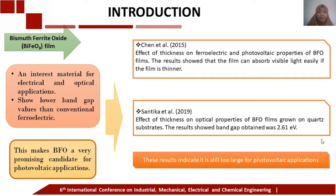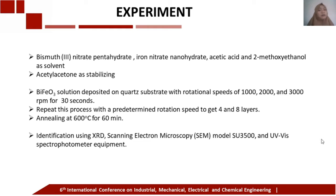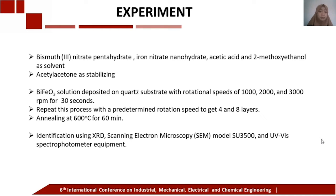This study aimed to examine the effect of rotational speed on microstructure and optical properties of BFO on a quartz substrate. For the experiment, we used bismuth, iron, acetic acid, and 2-methoxyethanol as solvent, and acetylacetone as stabilizer. BFO solution was deposited on a quartz substrate at rotational speeds of 1,000, 2,000, and 3,000 RPM. The process was repeated to obtain 4 and 8 layers, then annealed at 600°C for 60 minutes. Characterization was performed using XRD, SEM, and UV-Vis equipment.